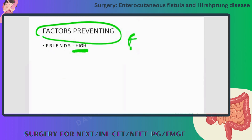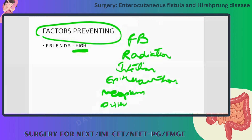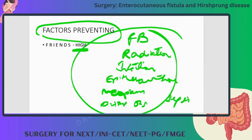The mnemonic is FRIENDS. F is foreign body, R is radiation, I is infection, E is epithelialization, N is neoplasm, D is distal obstruction, S is sepsis. If any of these factors is present, the fistula won't heal.